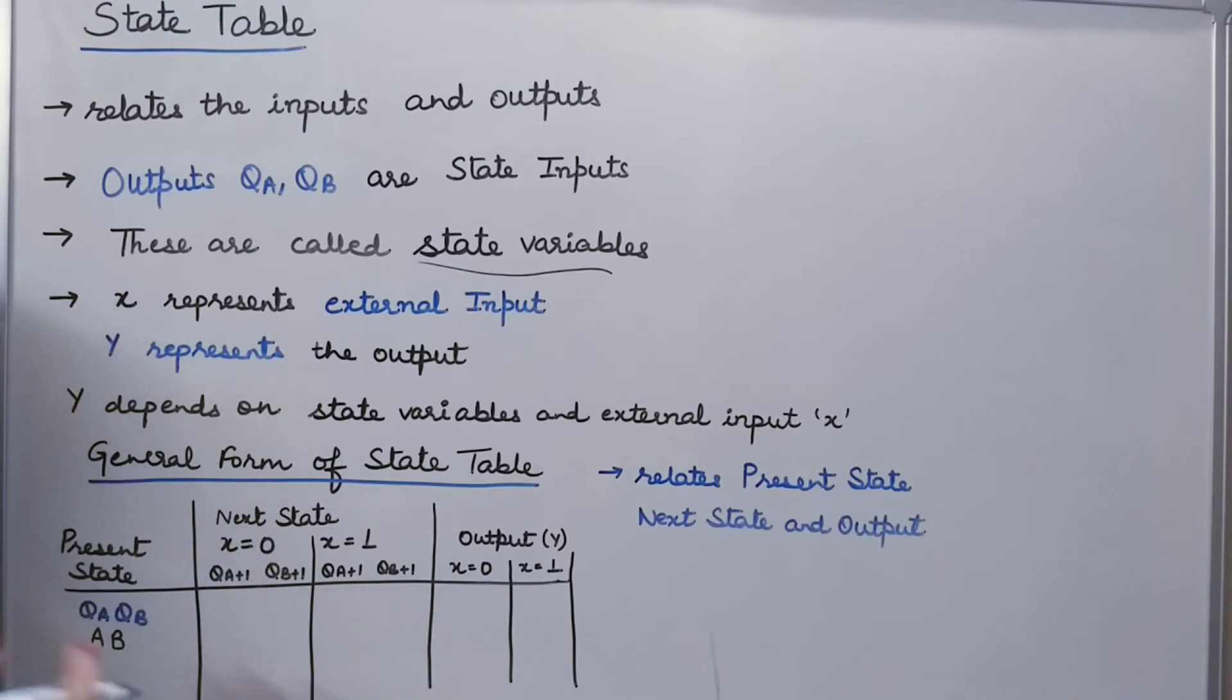Now, next state. Why I have divided the next state like this? Because when I am talking about an input, my input as per a digital circuit, it can have a value either 0 or it can have a value equal to 1. So, I will be writing down the next state for X equal to 0 and for X equal to 1.